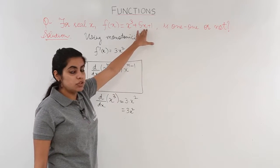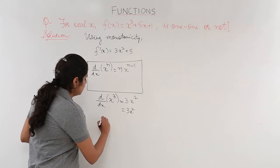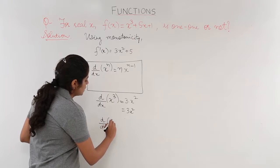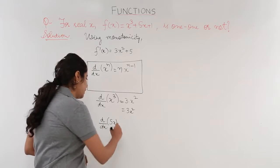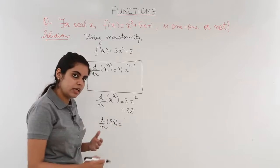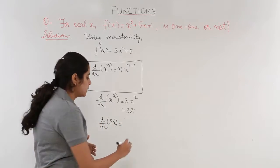Now about the second term which is 5x. d/dx of 5x. 5 times x^1 is 5x. 5 is a constant can be taken out.